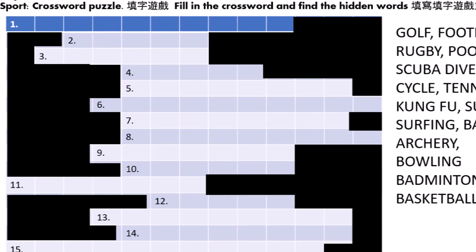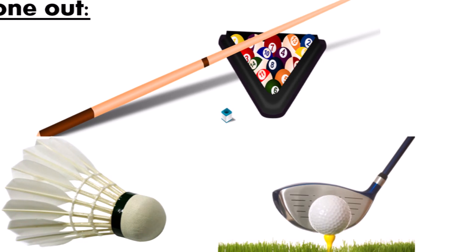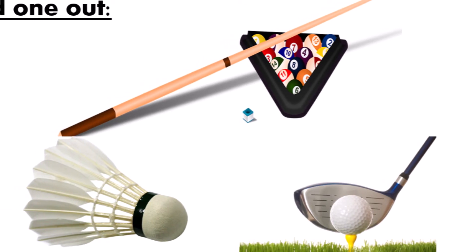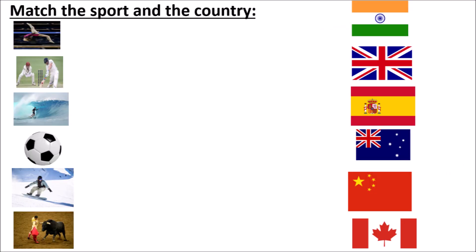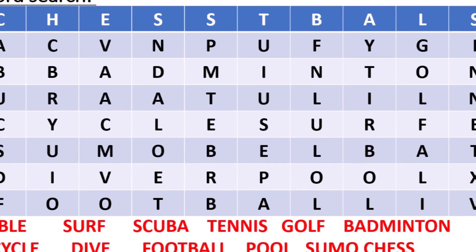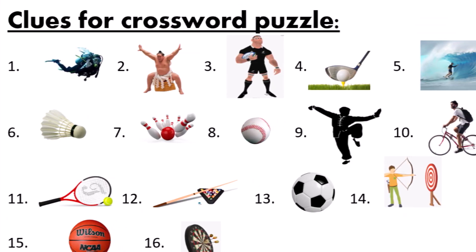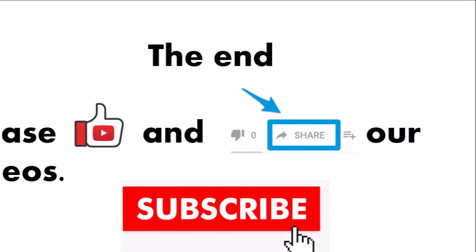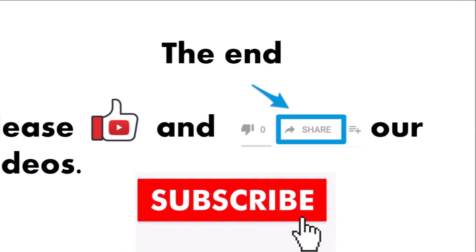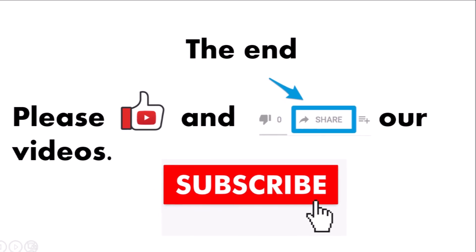Other activities such as miming, crossword puzzles, matching, and finding the odd one out are used to review and ensure that newly gained information will be retained for a longer period of time. The students don't realize this as they are having fun and enjoying the lesson. I hope you have enjoyed this video and that it is insightful for your future planning of a CLIL lesson. Please like and share this video.